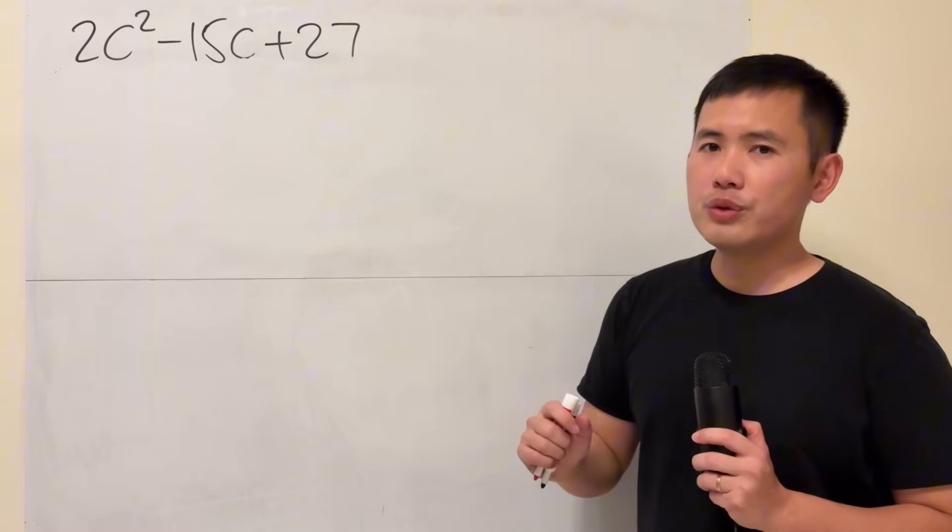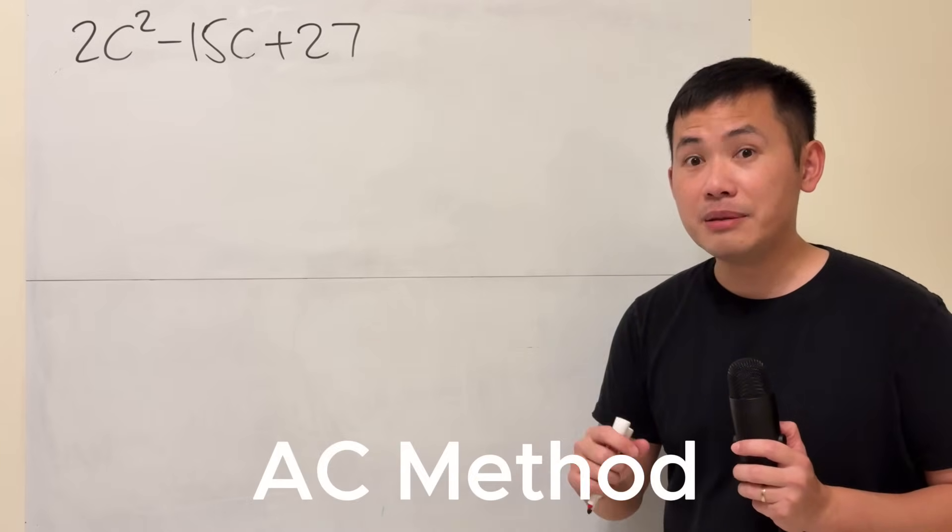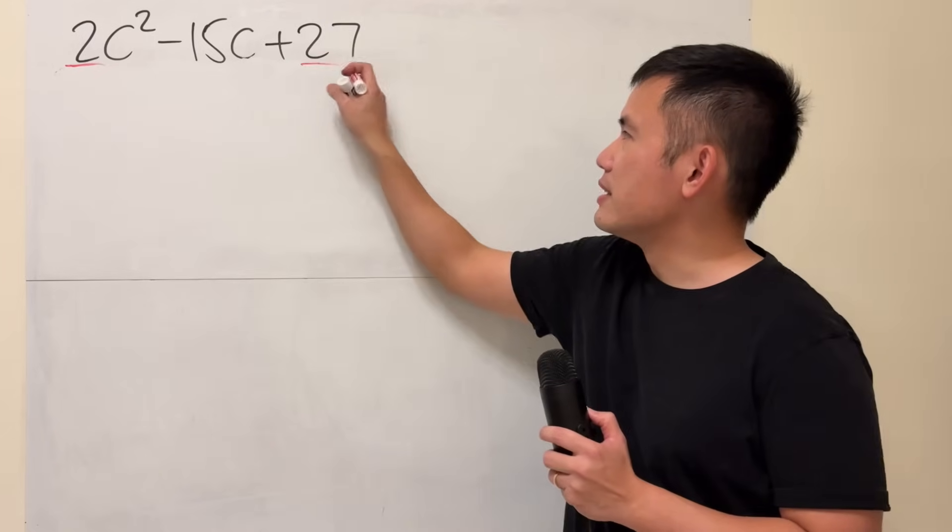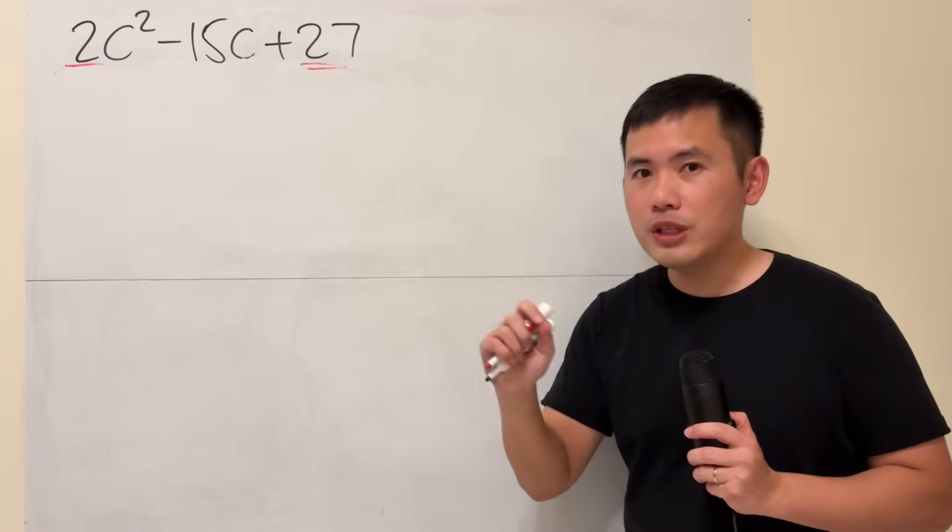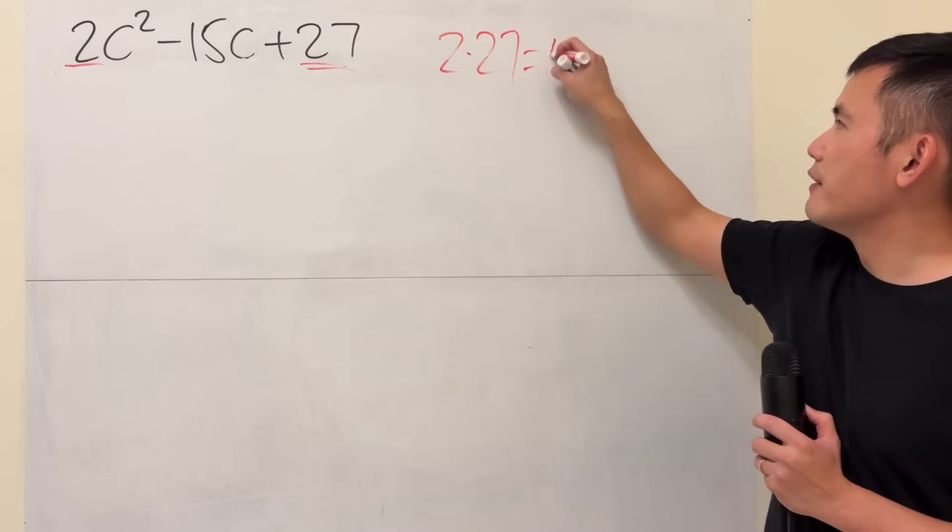And the method that you're using is called factor by grouping, and some other people will also call this the ac method. Because this right here is the a, and this right here is the c, you will first have to multiply a and c together. 2 times 27 gives us 54.